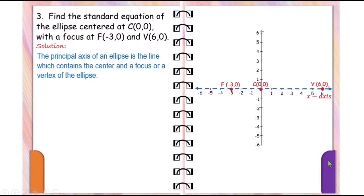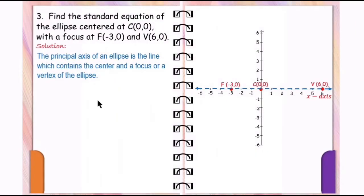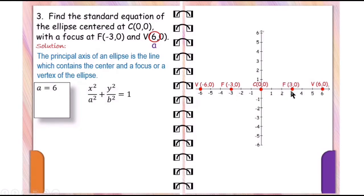Since one of the vertices has coordinates (6, 0), the other vertex is (-6, 0). Thus, a is equal to 6 — the distance from the center to each vertex is 6 units. And since one of the foci has coordinates (-3, 0), the other focus is (3, 0). Thus, c is equal to 3, since the distance from the center to one focus is 3 units.